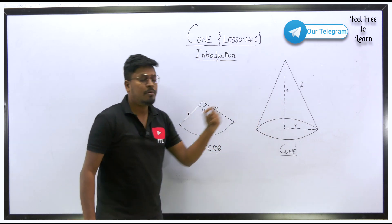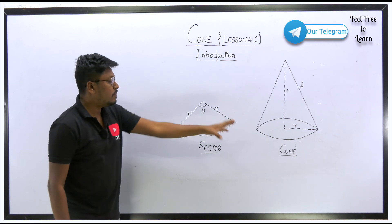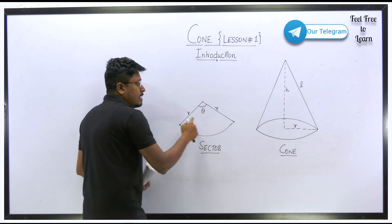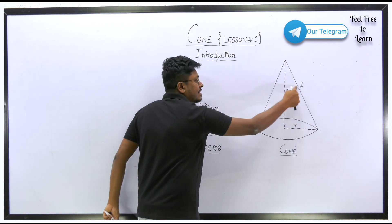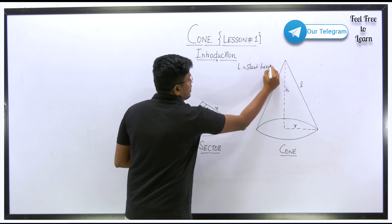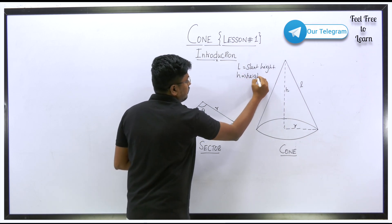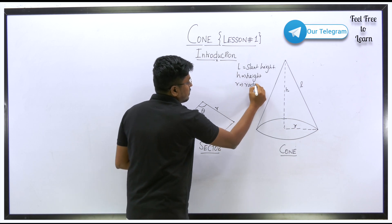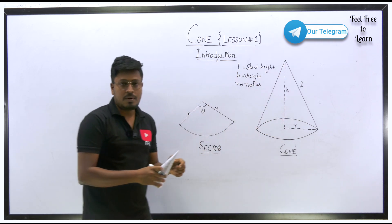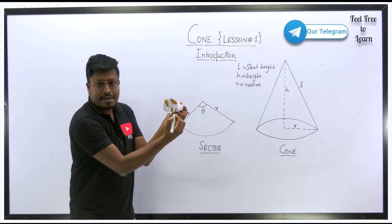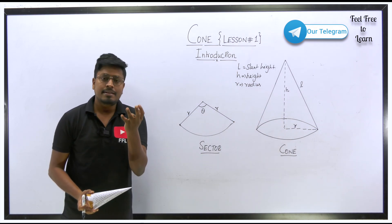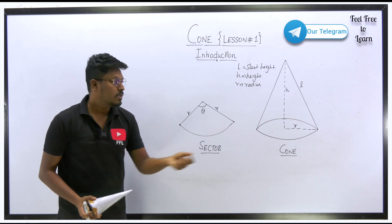That is the reason we always learn about the sector before learning the cone. When you join the two radii of a sector, it forms a cone. This radius of the sector becomes the slant height (l) of the cone. The normal vertical height is h, and r is the radius of the circular base. Three things are important: l (slant height), h (height), and r (radius of the bottom circle).